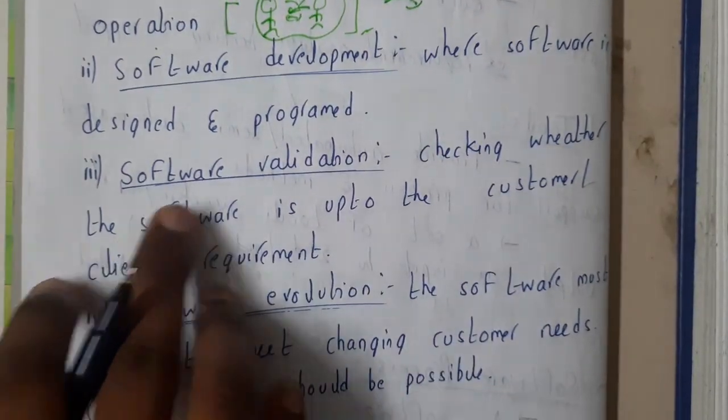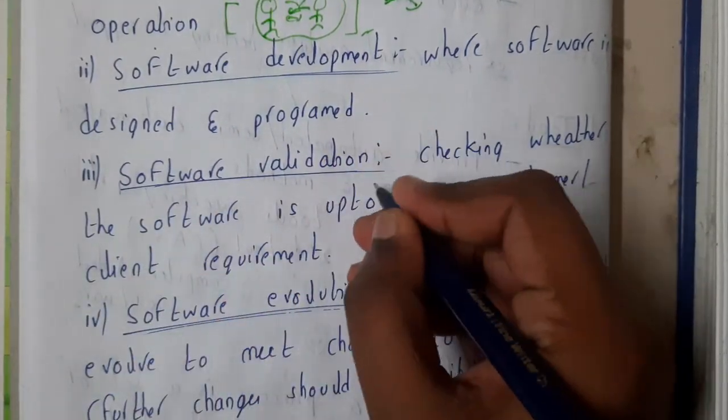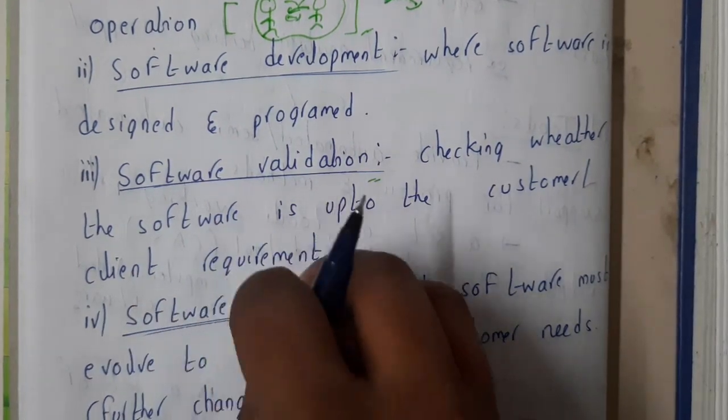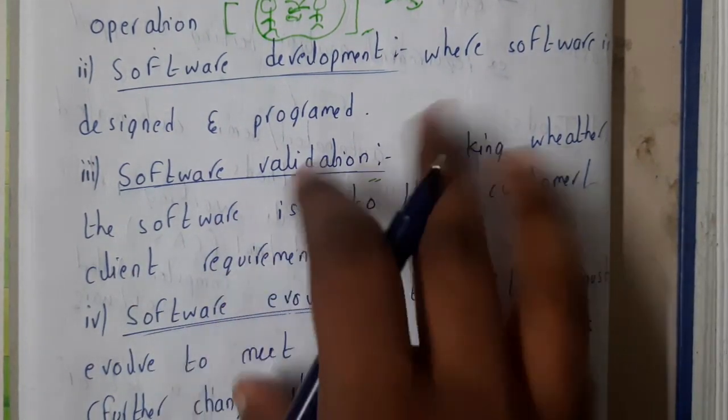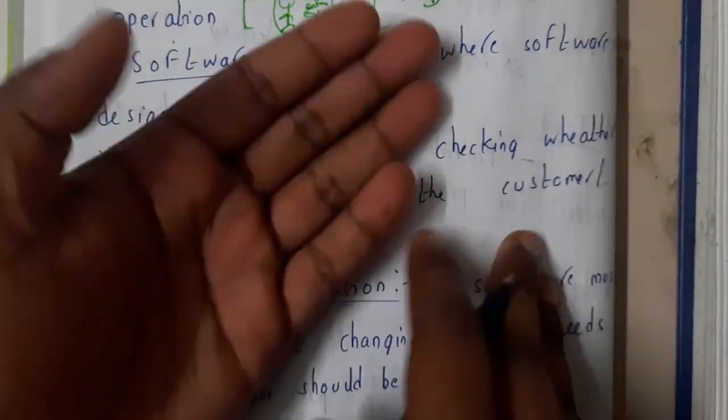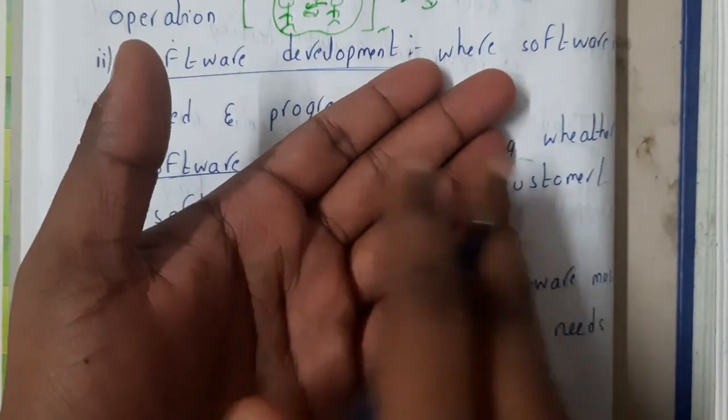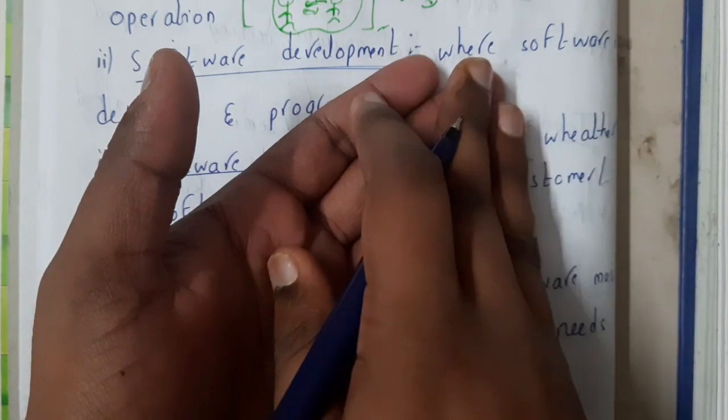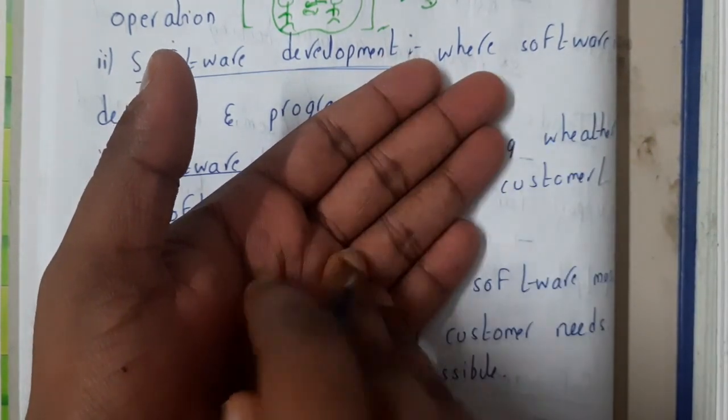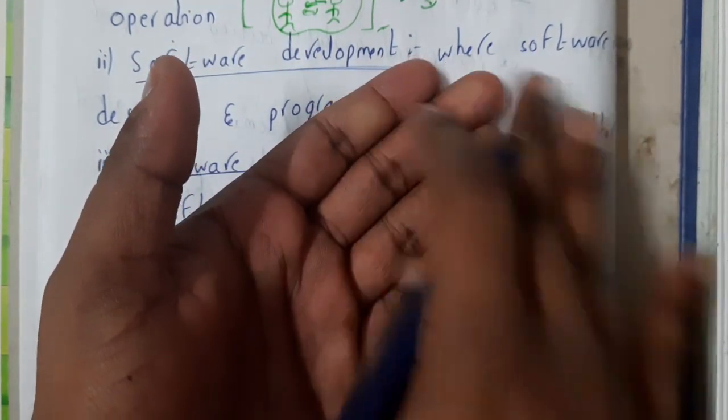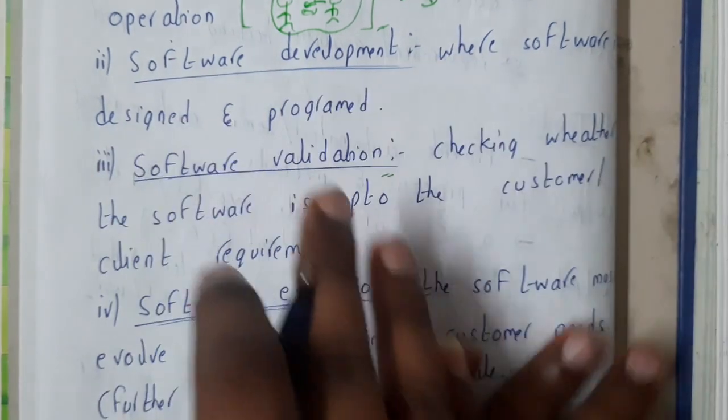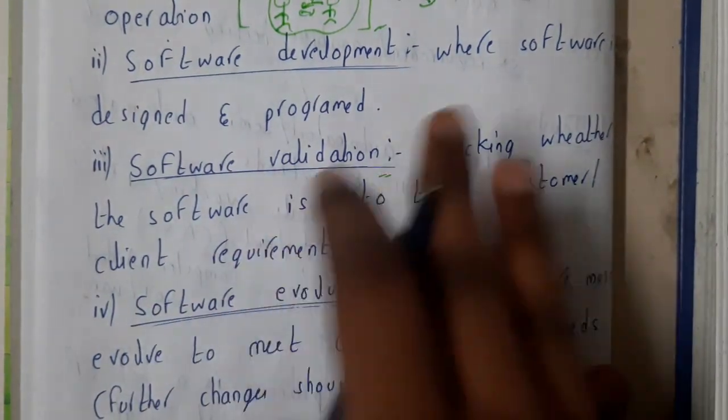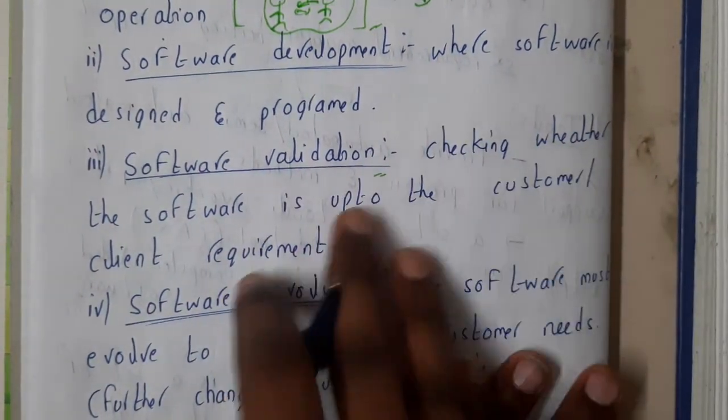Then software validation. So basically you designed or created a software, right? Now you'll be taking that software model as the product to your client, who gave you the project. You'll be taking it to him and he will be validating it, checking it according to his requirement, checking whether the software is up to the customer or client requirement or not.